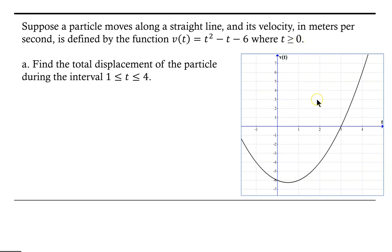Here on the right we have a graph of the velocity function. What we want to do is find the total displacement of the particle during the interval from 1 ≤ t ≤ 4 — that is, the displacement from t = 1 to t = 4.